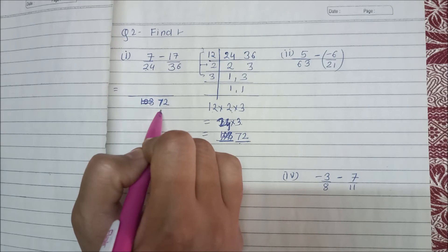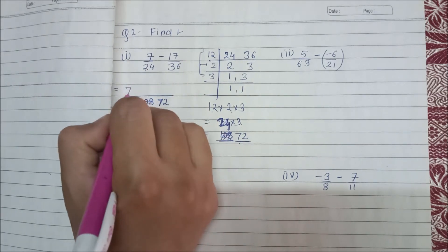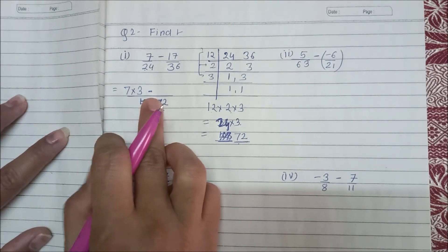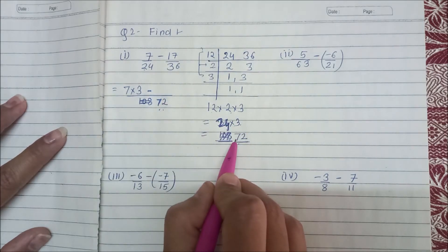24 to 72, we will multiply because 24 times 3 is 72, we will multiply. Minus sign as it is for subtraction. Next is 36 times 2 is 72.